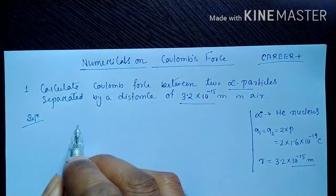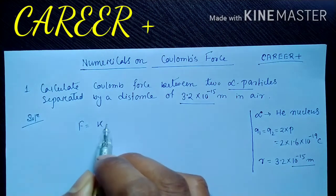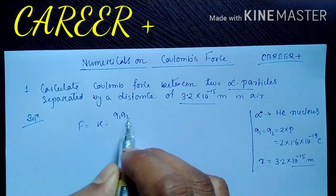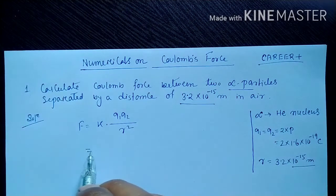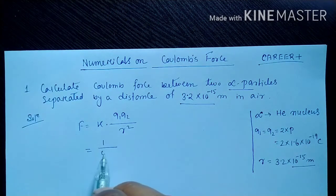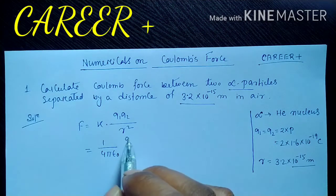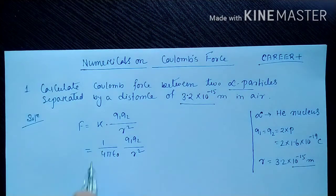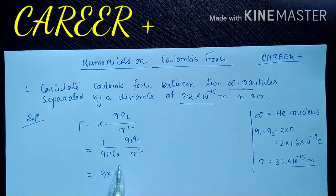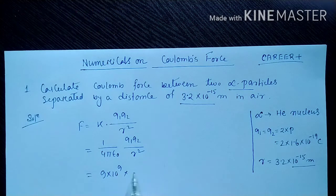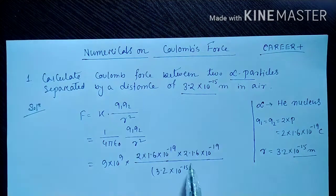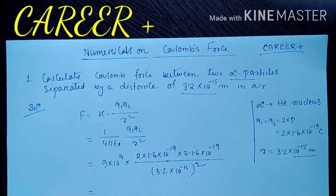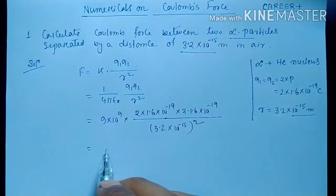We know Coulomb's force F = K·Q1·Q2 / r². We can also write K = 1 / (4πε₀). The value of K for air or vacuum is 9 × 10⁹. Put the values of Q1, Q2, and r into the formula and do the calculation. You should get the answer as 90 Newton.